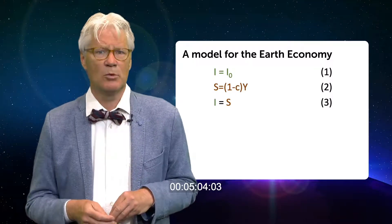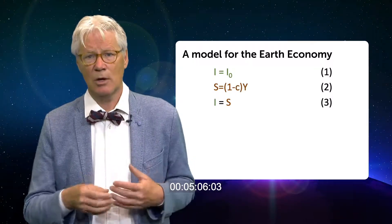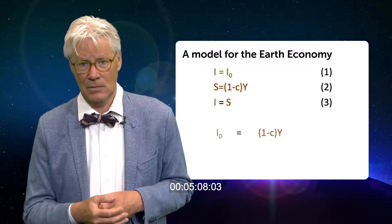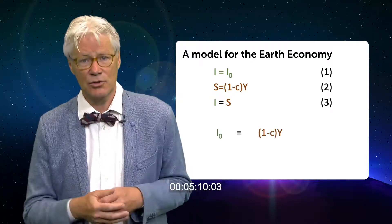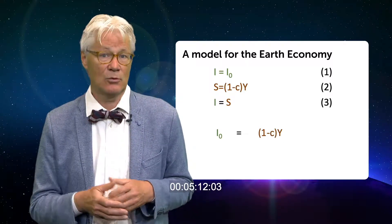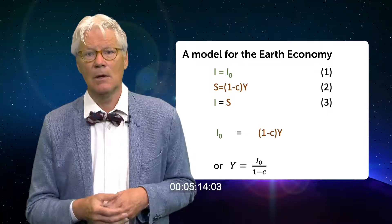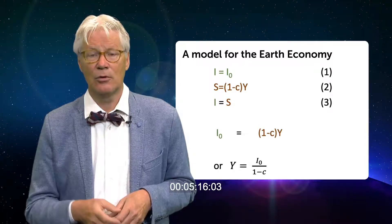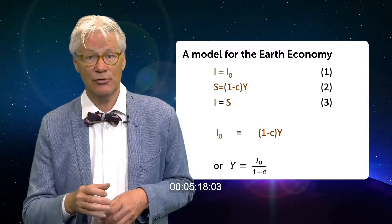In order to solve the model, I will substitute equations 1 and 2 into 3. I rearrange to bring all exogenous variables and parameters to the right-hand side. And this expression is called the reduced form equation for GPP.